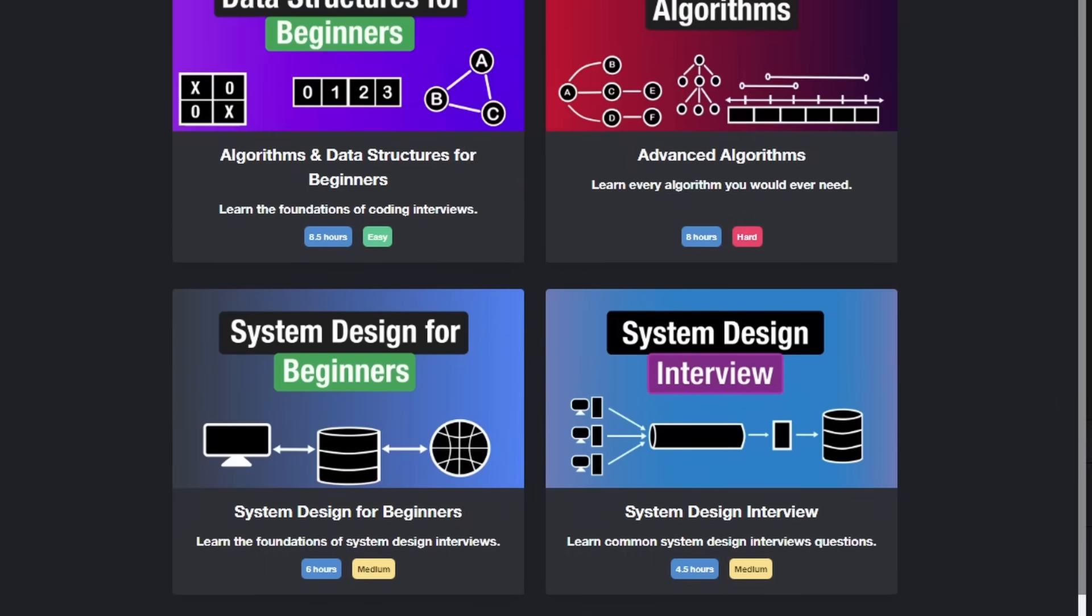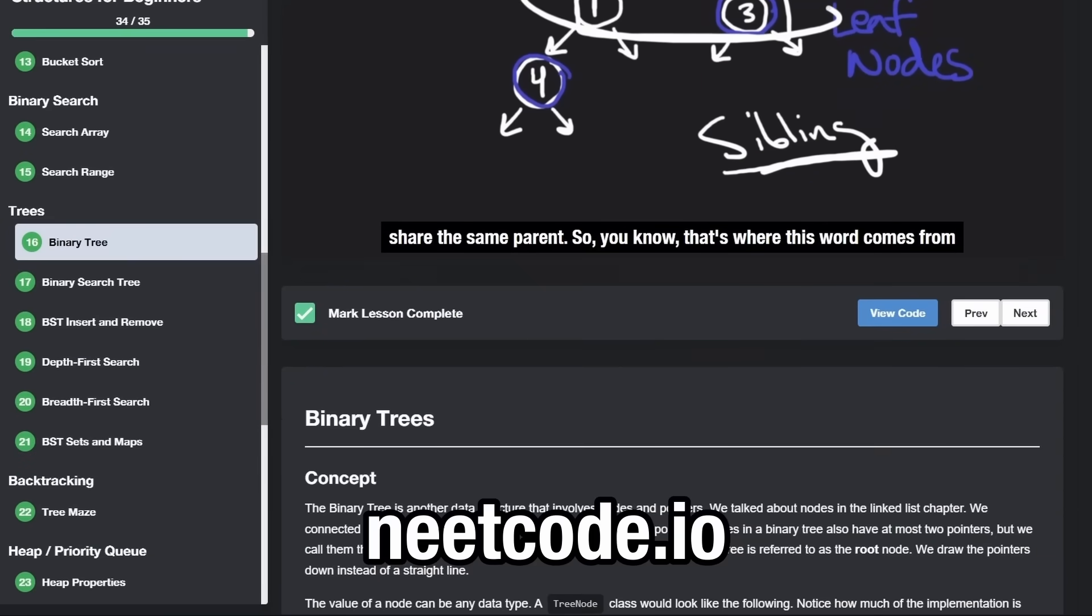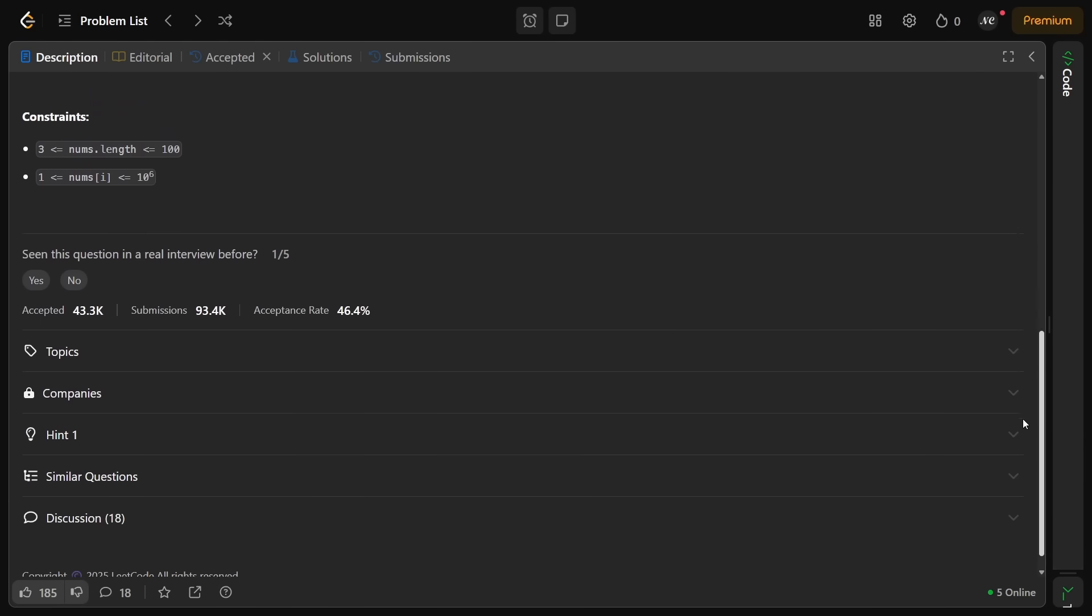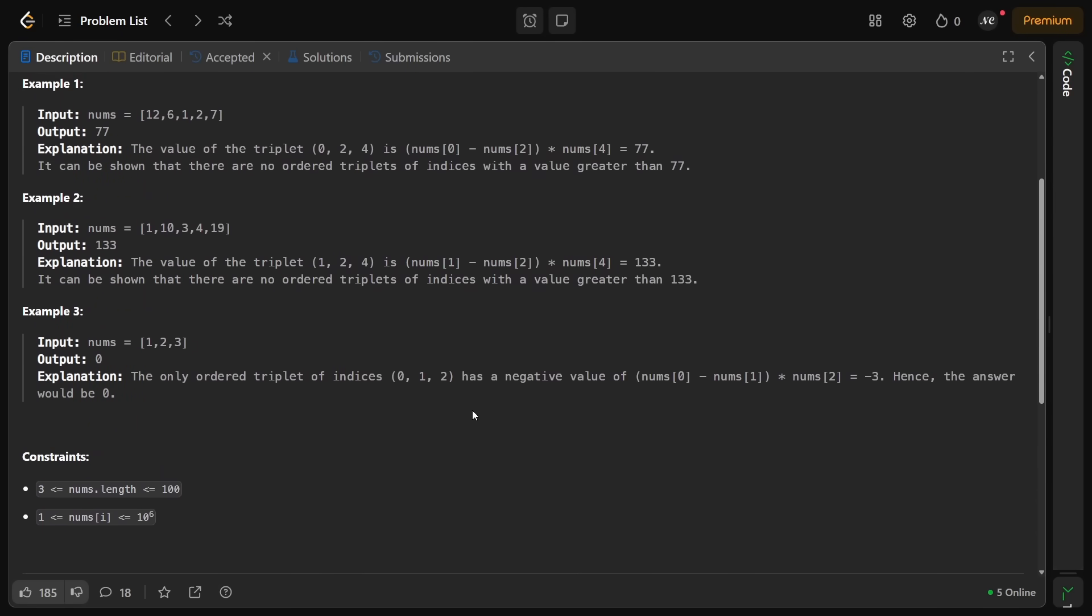Hey everyone, welcome back and let's write some more neat code today. So today let's solve the problem, maximum value of an ordered triplet one. And this problem is actually exactly the same as a different problem, but just take a look at the constraints for a second. So the length of this array could be up to 100 and the values could be up to a million, I think between one and a million.